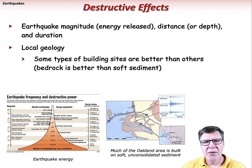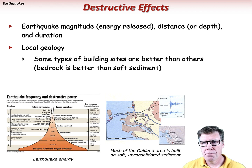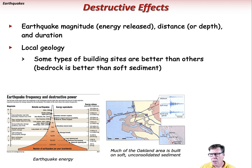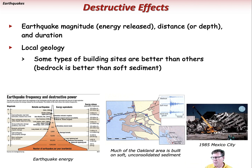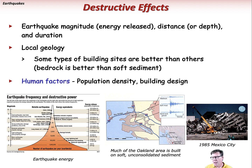Bedrock typically allows seismic waves to pass through more efficiently than soft sediment. Destruction caused by the 1985 Mexico City earthquake was made worse because much of the city is built on soft lake sediment. This is also a problem in many seismically active coastal areas like the San Francisco Bay Area. Human factors like population density and building design are also important variables — areas with poorly reinforced building design usually suffer greatly, as has happened in China, Nepal, and Haiti.